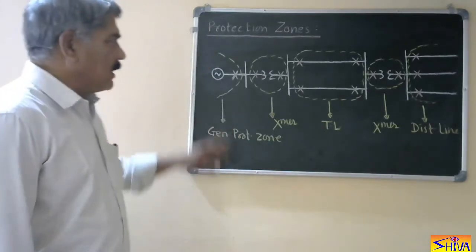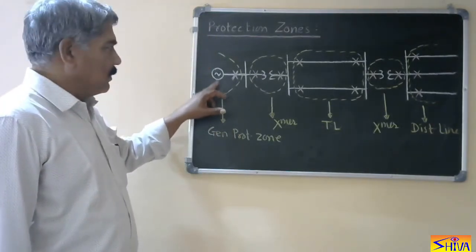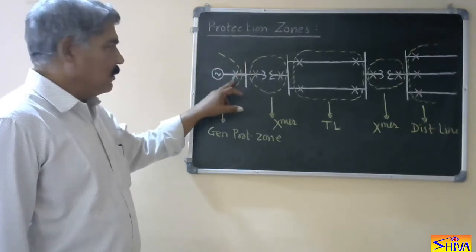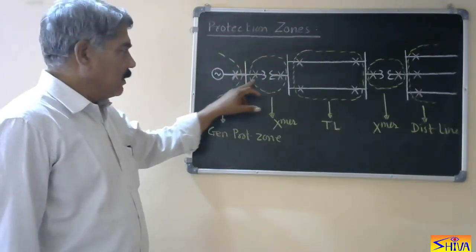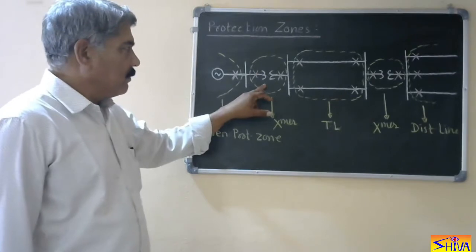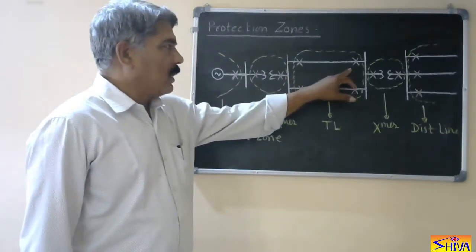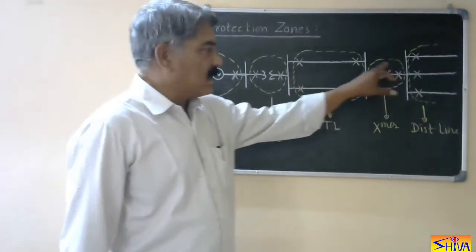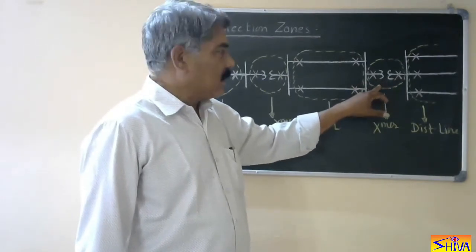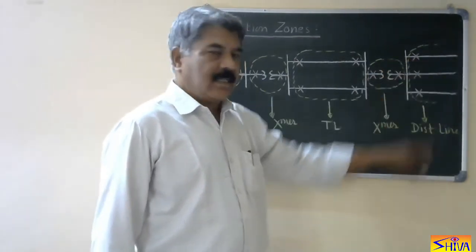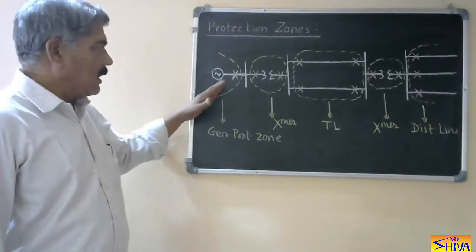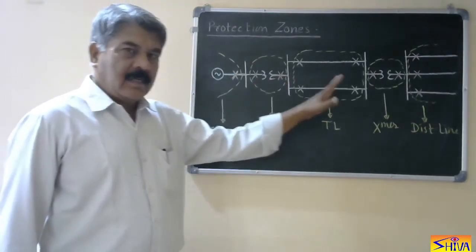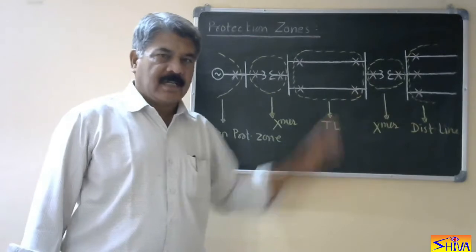Now let us consider this power system. A generator is connected to a busbar — this is the circuit breaker and relay — then a step-up transformer, then two outgoing transmission lines, then again a step-down transformer, and then a distribution line.